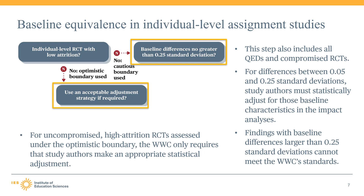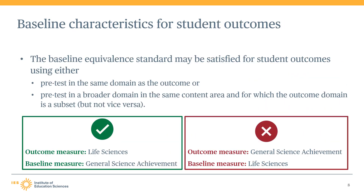What characteristics are required to be equivalent? The WWC assesses baseline equivalence on characteristics that are relevant to the outcome — those expected to have a strong association with the outcome. For student outcomes, the baseline equivalence standard may be satisfied using either a pretest in the same domain as the outcome, or a pretest in a broader domain in the same content area for which the outcome domain is a subset.